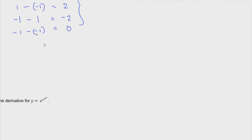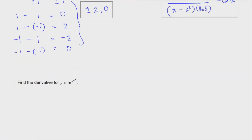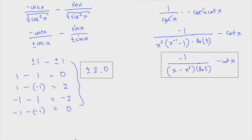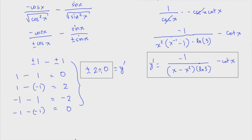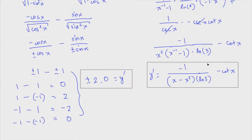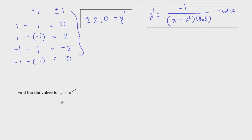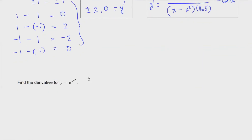For the next one, we need to find the derivative of y equals e raised to e raised to e to the x. I'll write y prime here so that we don't get any trouble with the answers. Or you can use f prime of x. Let's move on: y equals e raised to e raised to e to the x.